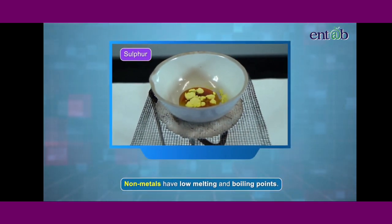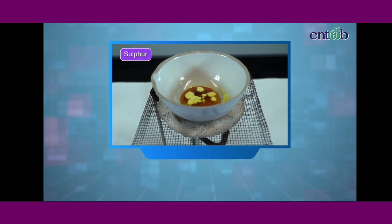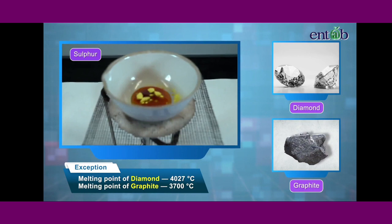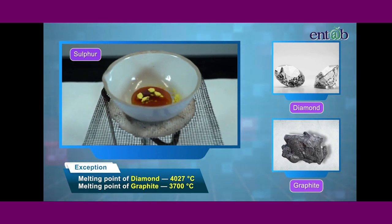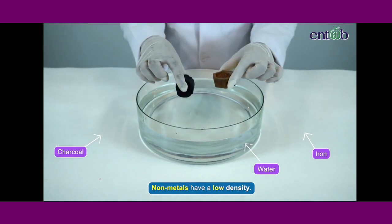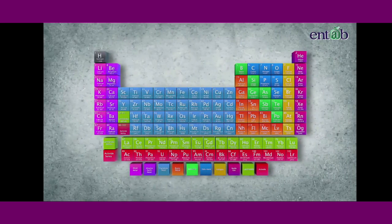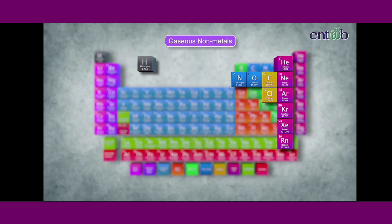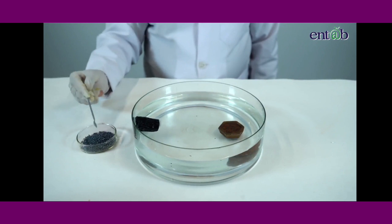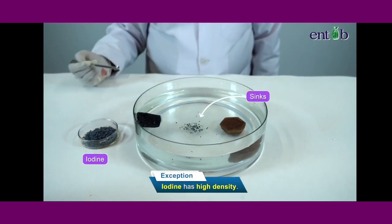Nonmetals have low melting and boiling points except for again diamond and graphite which have very high melting and boiling points. Nonmetals have a low density. The density of gaseous nonmetals is extremely low. However, here too iodine is an exception and it has high density.